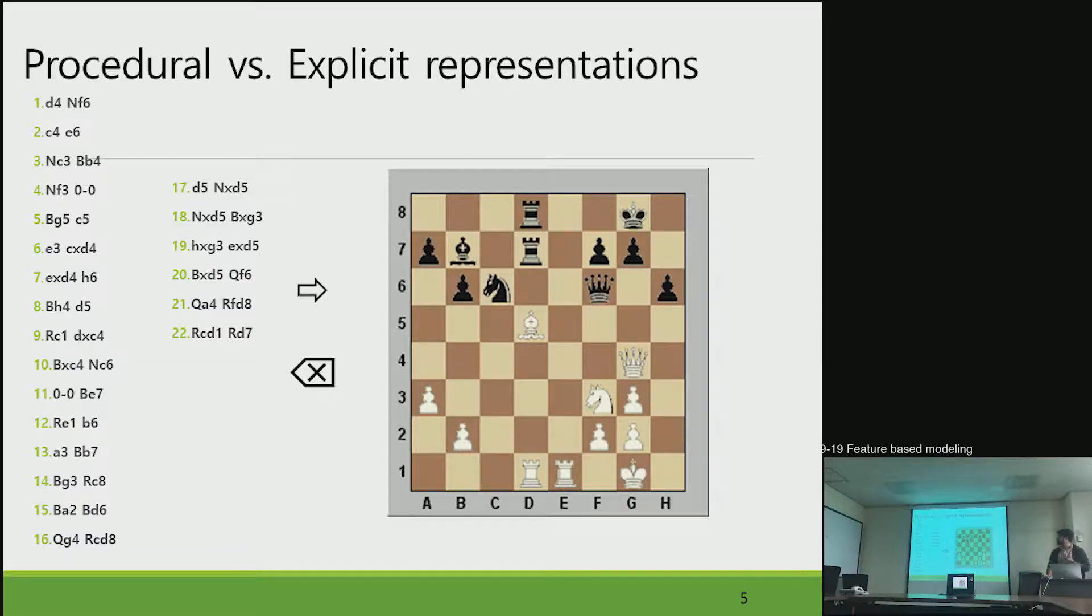It is a bit simple because the question has already explained this slide very well. In the case of procedural model we can follow each step and come to a point, but in the case of explicit model we cannot make the procedure from that model. If we change something in explicit model we cannot trace it to the back point.